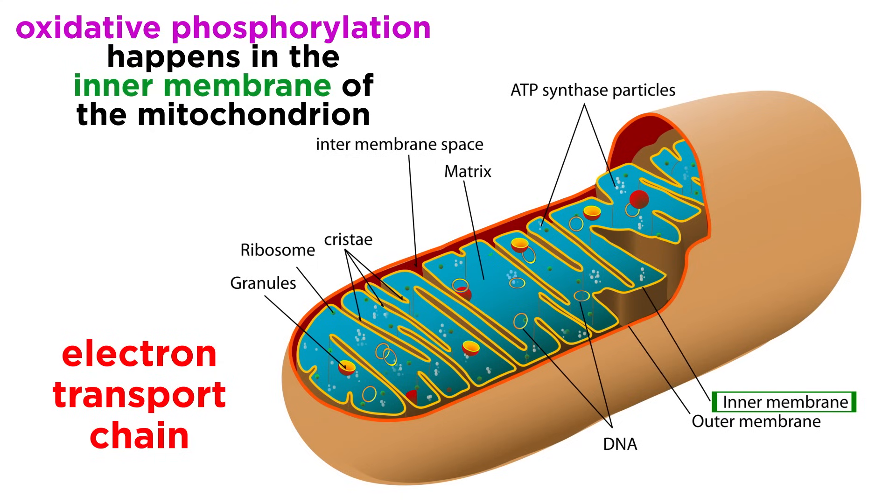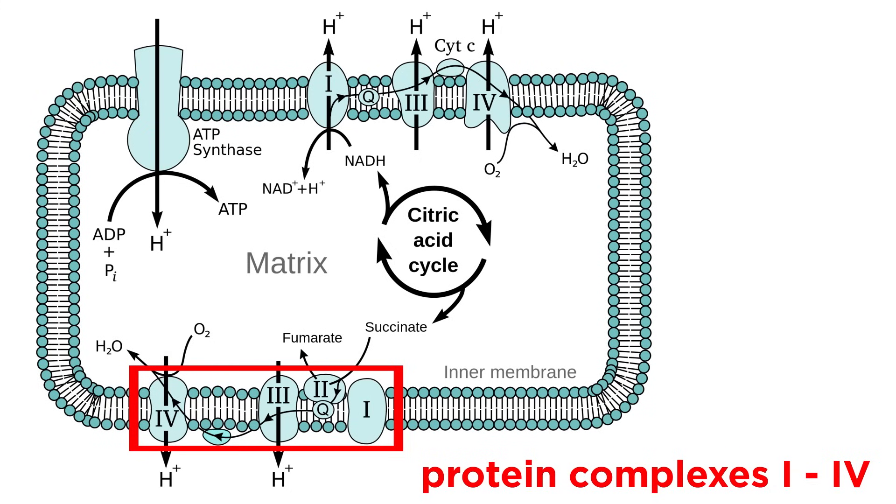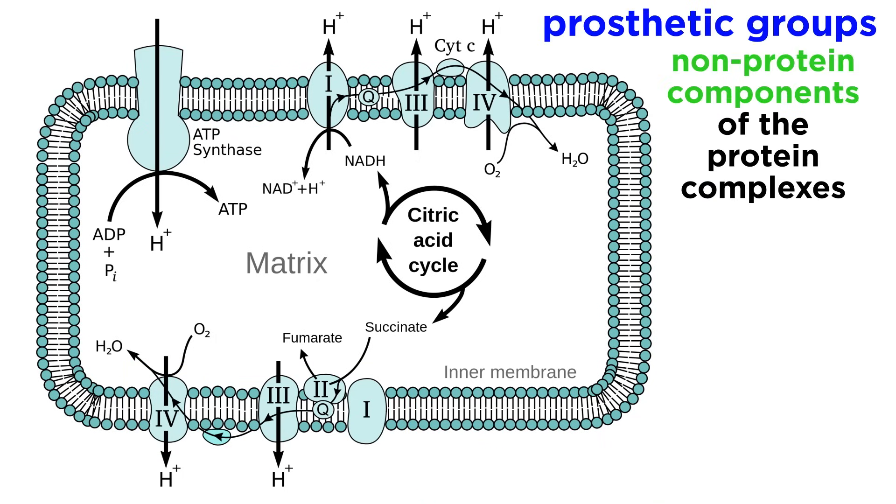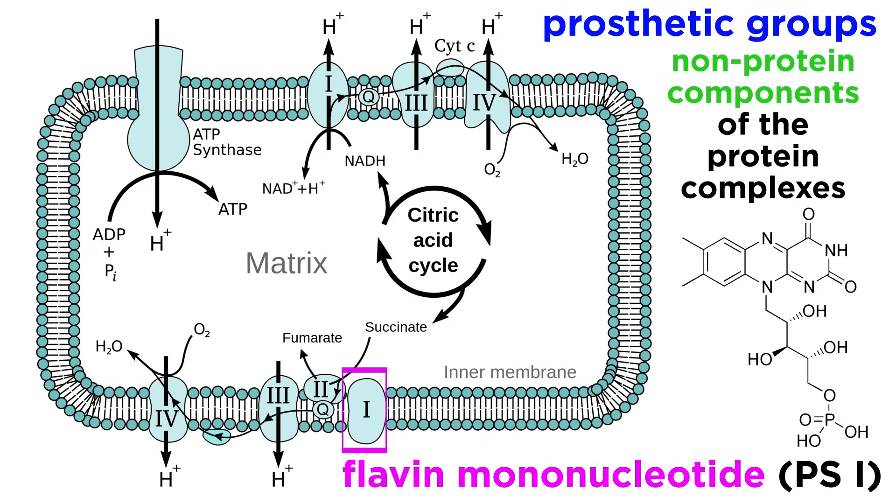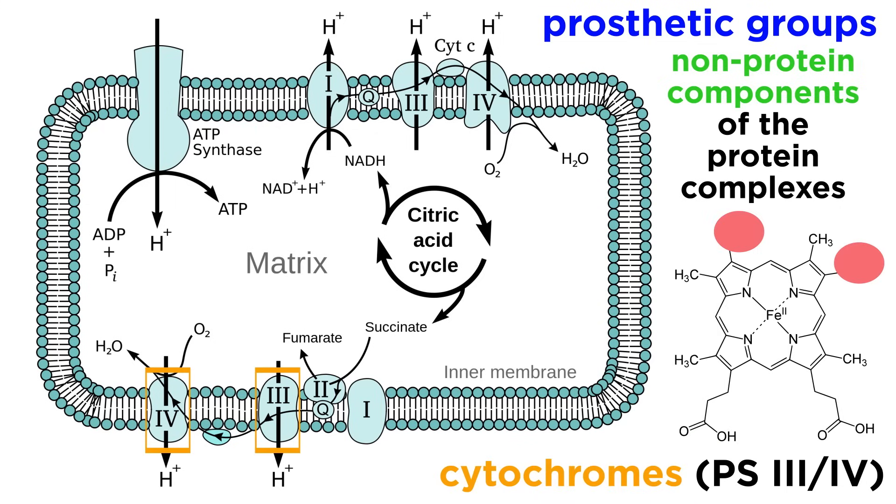This pathway utilizes an electron transport chain, which is a series of mitochondrial membrane proteins that sit in the inner membrane of the mitochondrion, and we refer to these as protein complexes one through four. These proteins bear a variety of prosthetic groups, which are non-protein components that give the protein its functionality, including flavin mononucleotides and cytochromes.